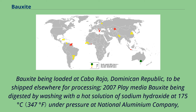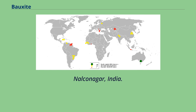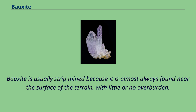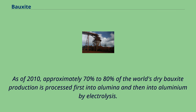Bauxite being digested by washing with a hot solution of sodium hydroxide at 175 degrees Celsius under pressure at the National Aluminium Company, Nalkanagar, India. Bauxite is usually strip mined because it is almost always found near the surface of the terrain with little or no overburden. As of 2010, approximately 70% to 80% of the world's dry bauxite production is processed first into alumina and then into aluminium by electrolysis.